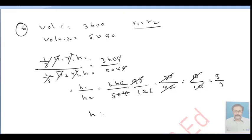Therefore, the ratio of the height is h1 to h2 equals 5 to 7. This is the answer.